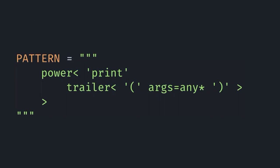The way this would look if we wanted to find all cases in our code where the print function is called, regardless of what the arguments were — the pattern string could be something similar to this. It says we want to look for, at the base, the power node. We're using the string literal 'print' to say we only care about print functions — it could also just be 'name' if you wanted to capture any function call. Then we're using the trailer node to define that it's actually a function call rather than list access. We have to put in the literal parentheses, and we use 'any' to represent we don't care about the type of the element inside, and the star to say it could be zero or more. We're also capturing this using 'args' to say that's an element we actually care about modifying later.